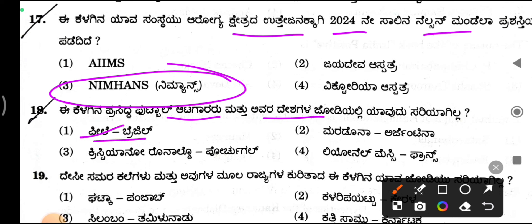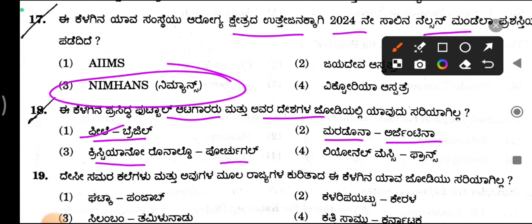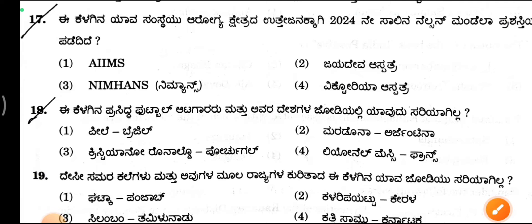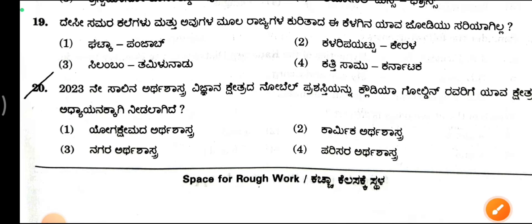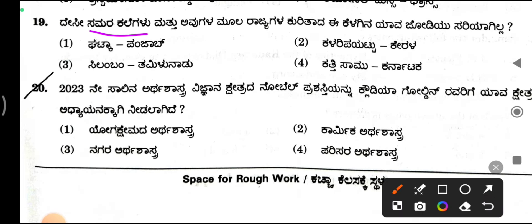Pele — Brazil is correct. Maradona — Argentina is correct. Cristiano Ronaldo is correct. Lionel Messi — Argentina, not France. So this is incorrect (Sariyagilla). Option 4 is correct. This gives a foreign minister, French minister, Japanese minister, French minister.